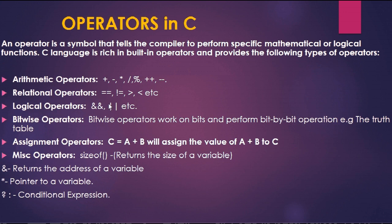The third type is the logical operator. Logical operators include AND and OR, and are used when you want to check conditions logically. The fourth type is the bitwise operator. Bitwise operators work on bits and perform bit-by-bit operations. The truth table is a good example of the bitwise operator.